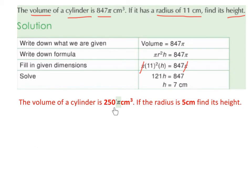The volume of a cylinder is 250π cm³. If the radius is 5 cm, find its height.